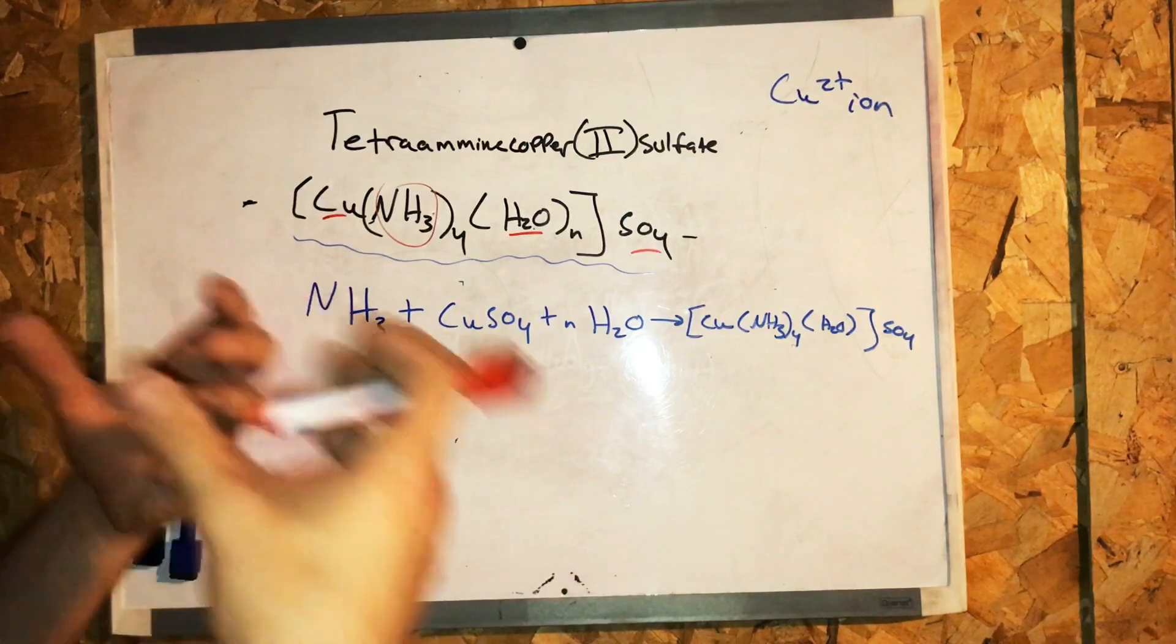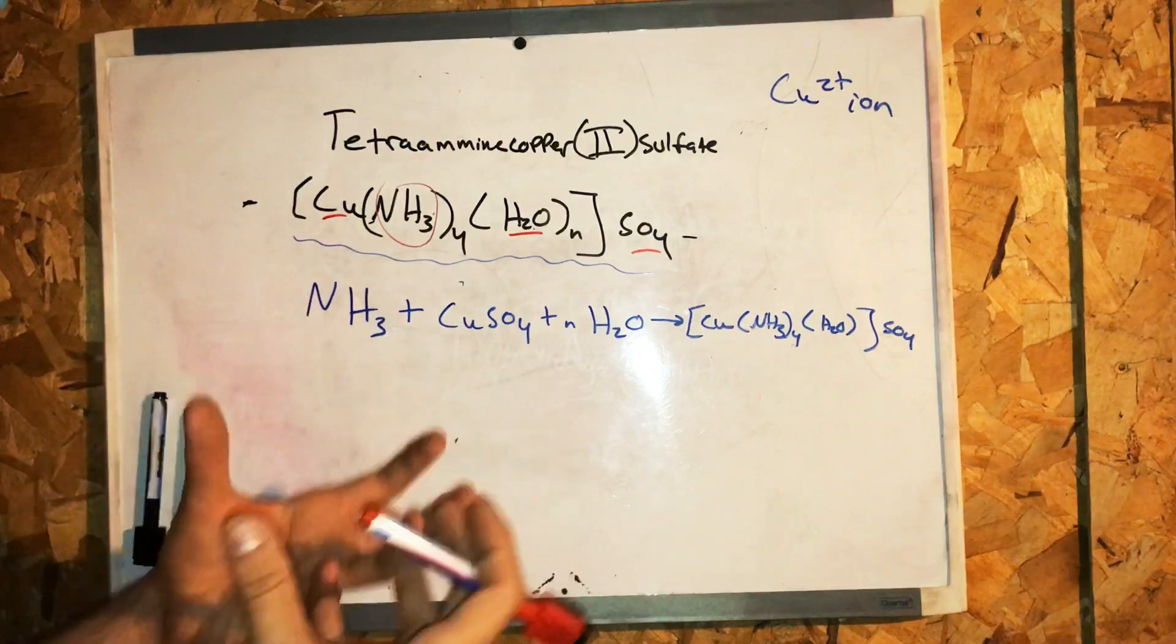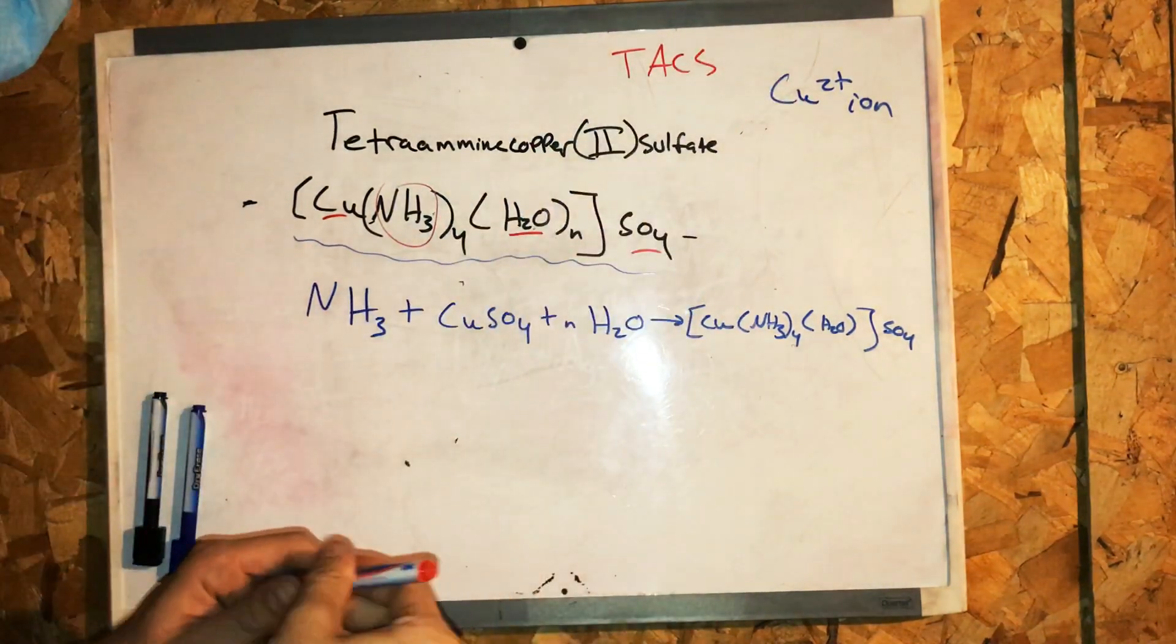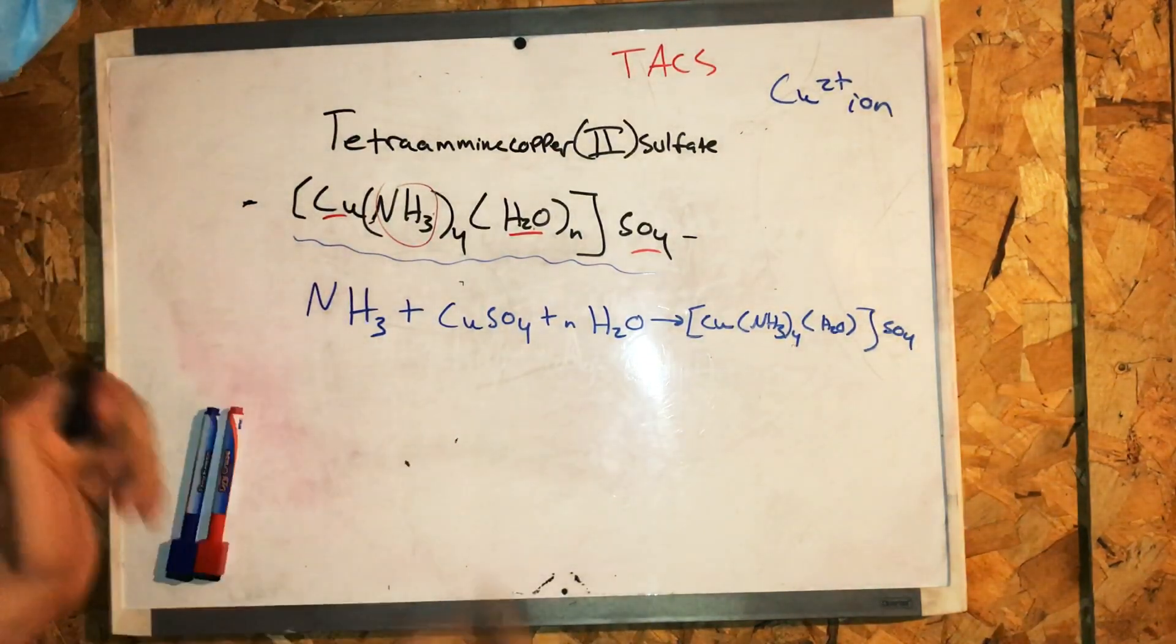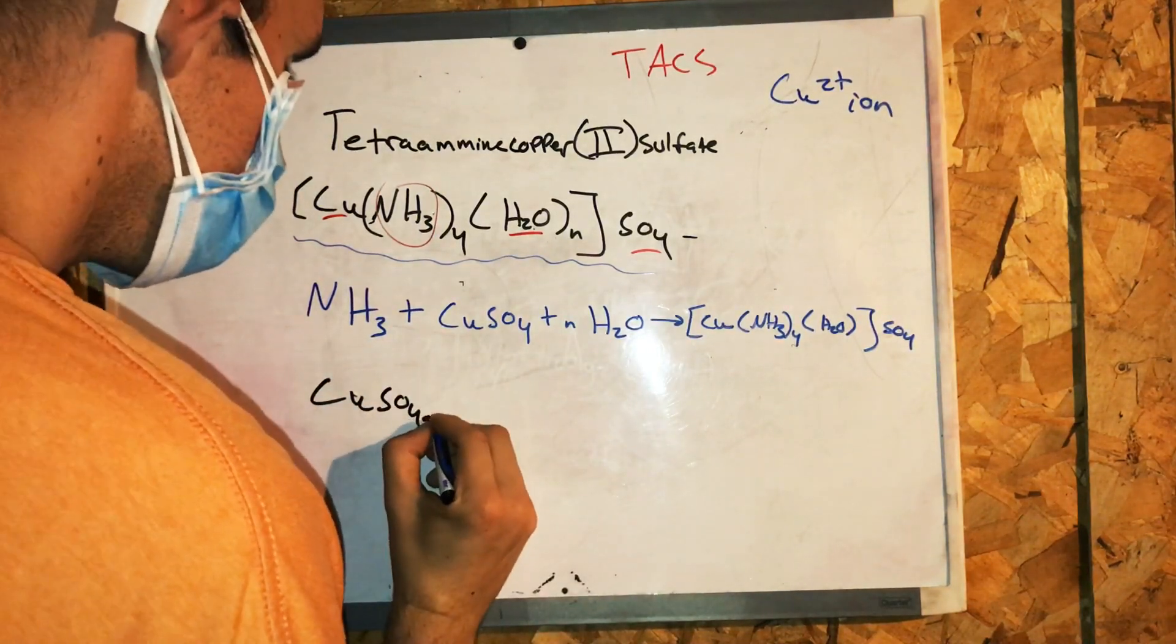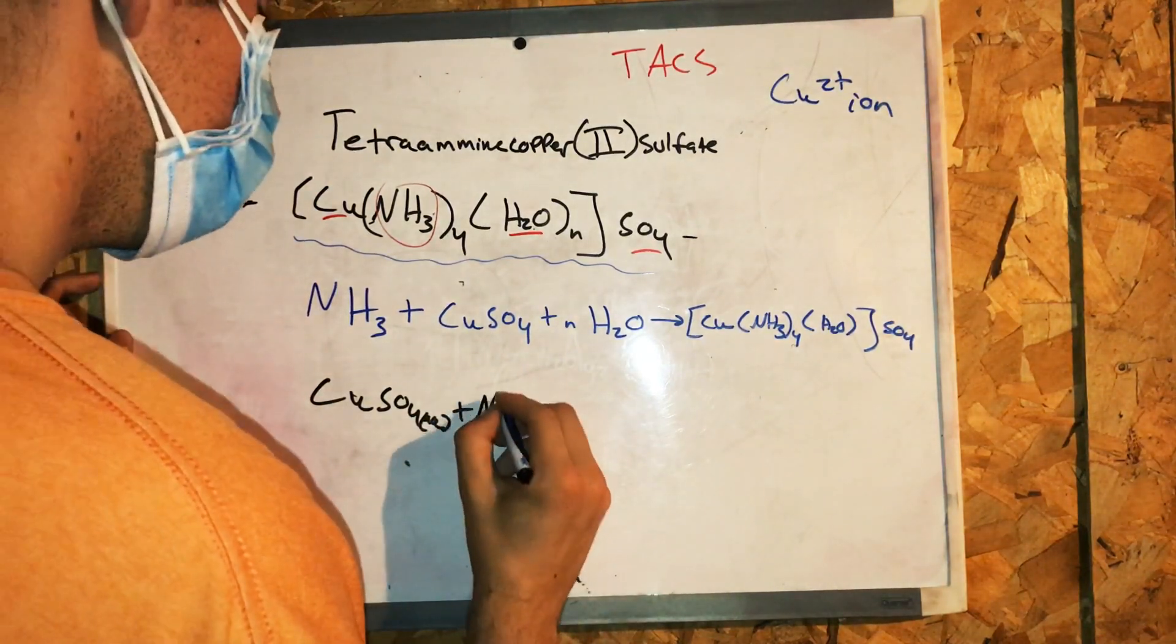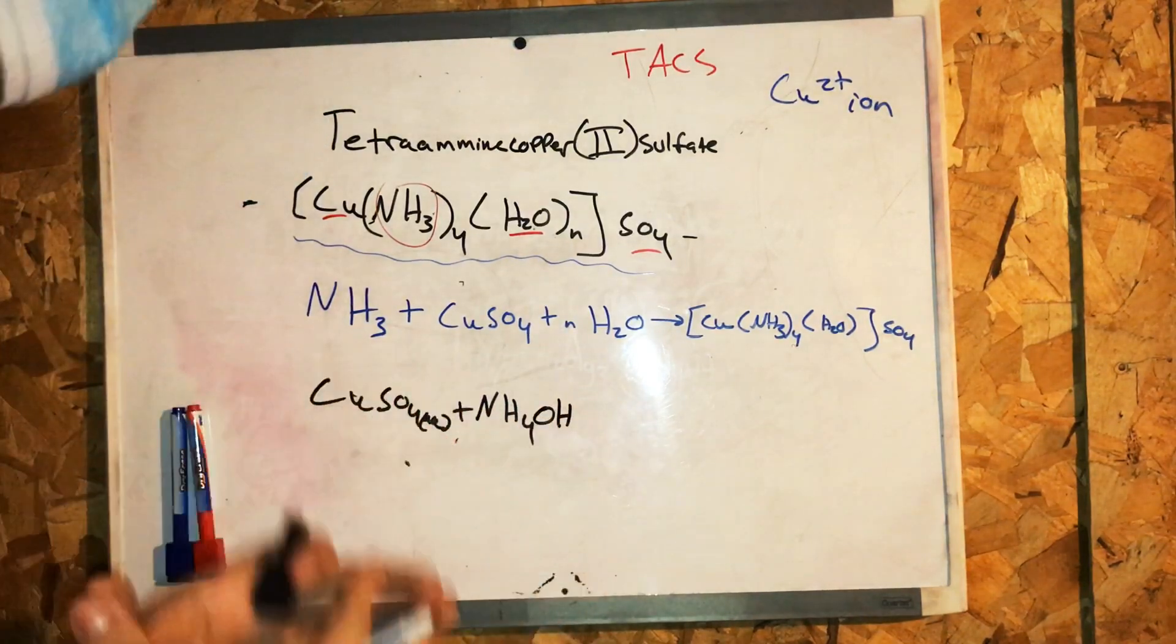Then, if I add extra ammonia, excess ammonia, then a dark blue color will form. This indicates the TACS or tetramine copper sulfate molecule. So, let's write this out: CuSO4 in aqueous form, plus I'm using ammonia solution, and if you know what ammonia solution is, it's ammonium, which is written NH4OH, so that's hydroxide.